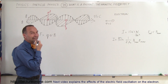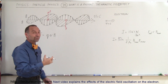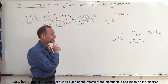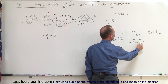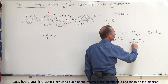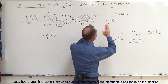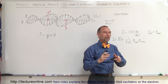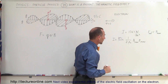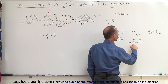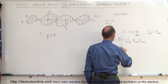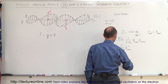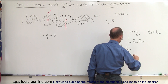We want to find the strength of the electric field and the strength of the magnetic field inside a photon coming from the Sun, where sunlight has an intensity of 1361 watts per square meter. Substituting B equals E over C, the intensity equals 1 over 2C mu-naught times E-max squared. Therefore, E-max equals the square root of intensity times 2 times the speed of light times mu-naught.